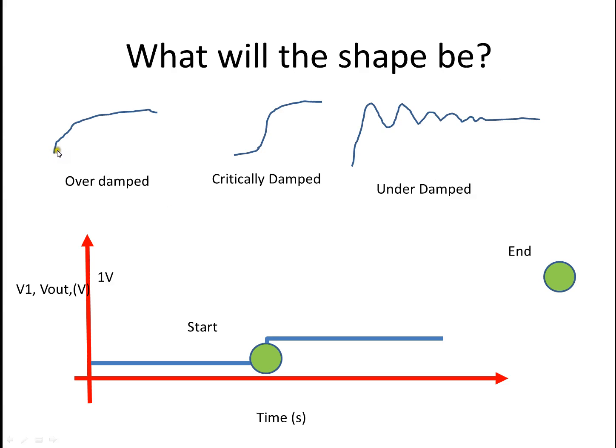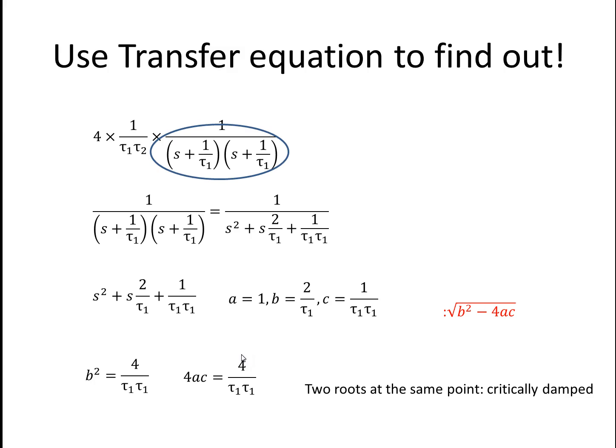But what will the shape be? Overdamped is that kind of exponential looking shape. Critically damped, you kind of start off slow, rise, and then kind of peter off. And underdamped, you have some kind of overshoot and ringing. So how will I draw this? Well, let's use the transfer equation to find out. All I really need is this part of it, because this is actually the natural response. So if I pull that out.